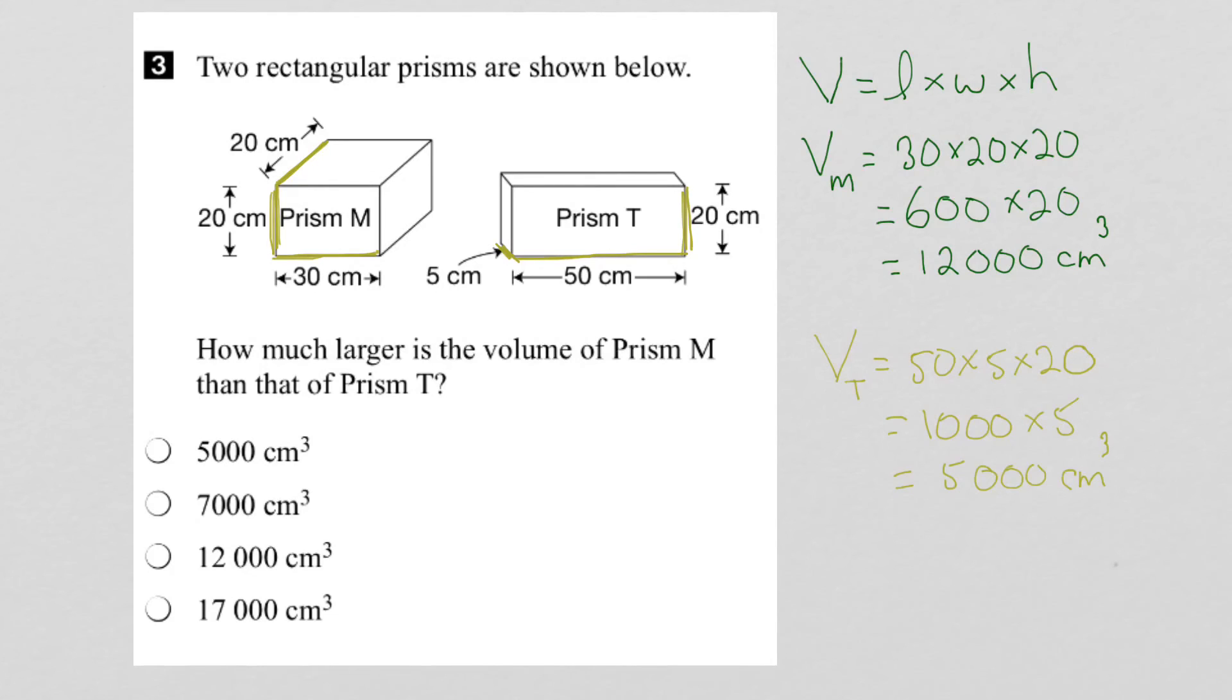So now we have enough information to answer the question. So how much larger is the volume of prism M? Well to figure that out, we take the volume of prism M, 12,000 cm³, subtract the volume of prism T, 5,000 cm³. And when we do the math, we do the subtraction here. 0 minus 0 is 0, 0, 0, and then 12 minus 5 is 7.